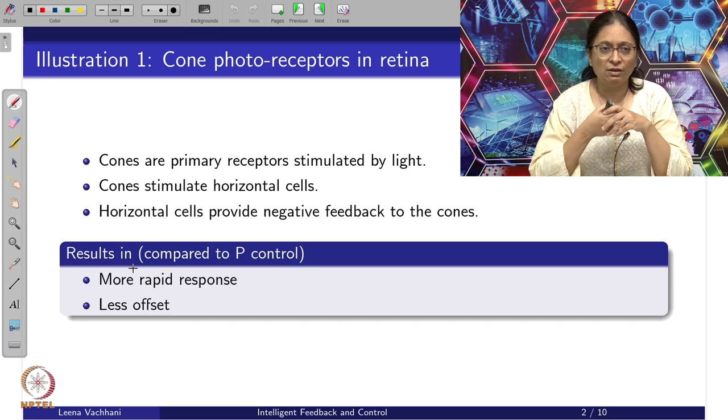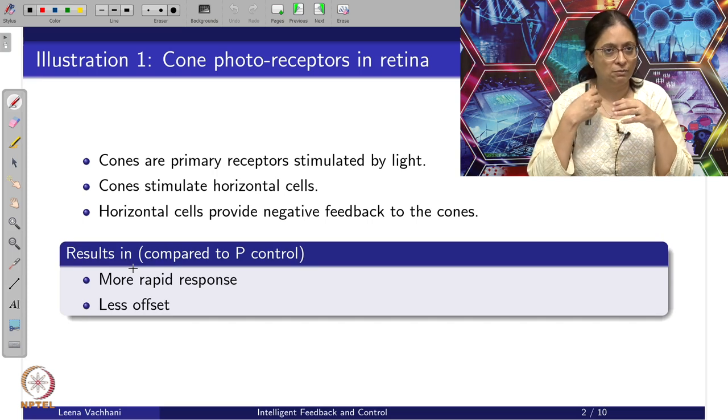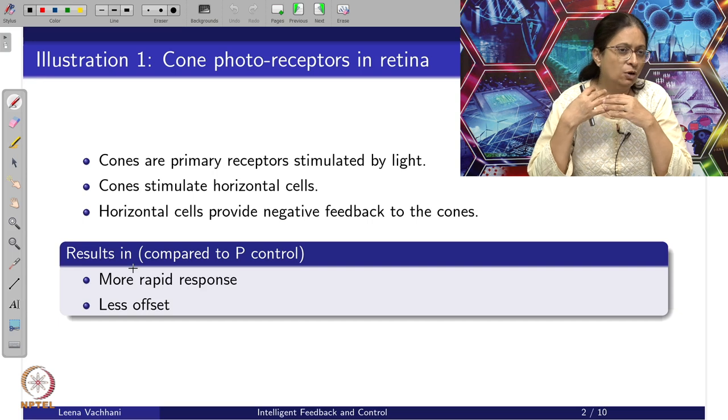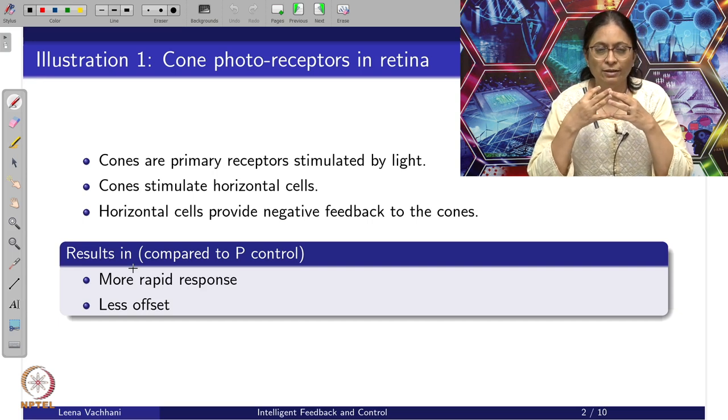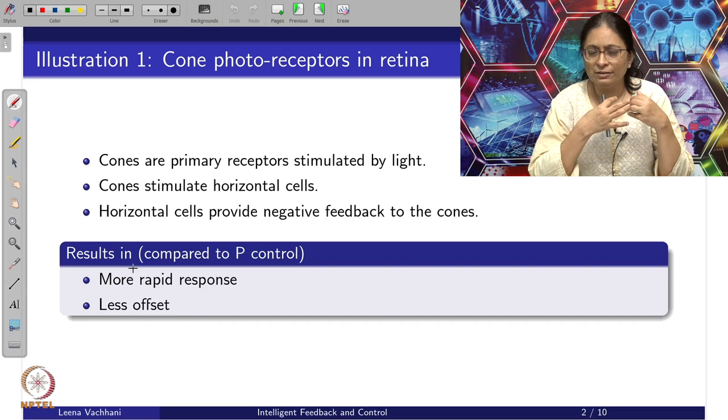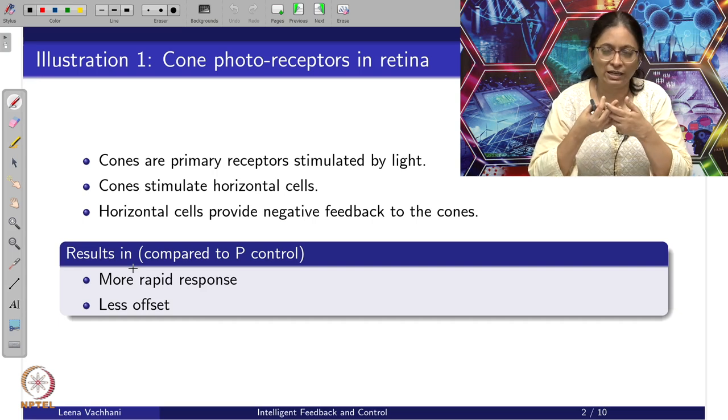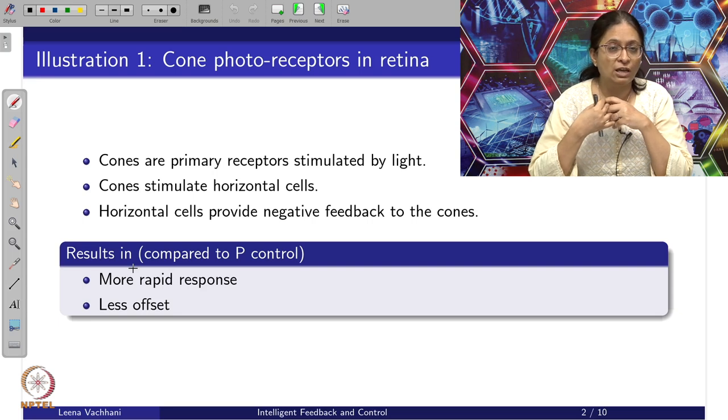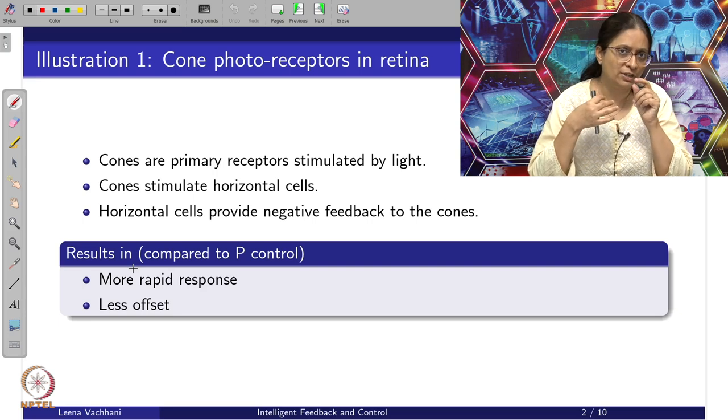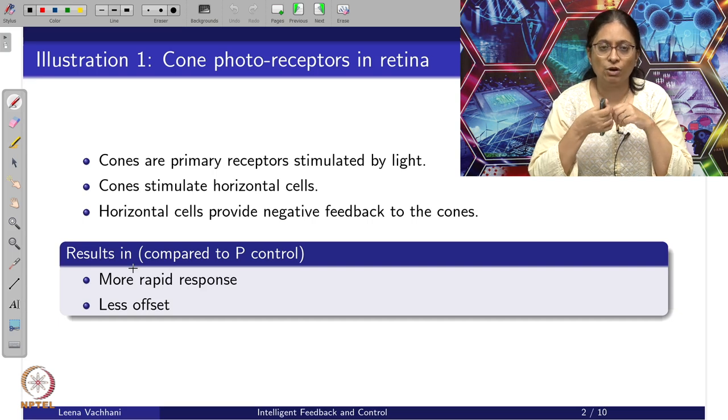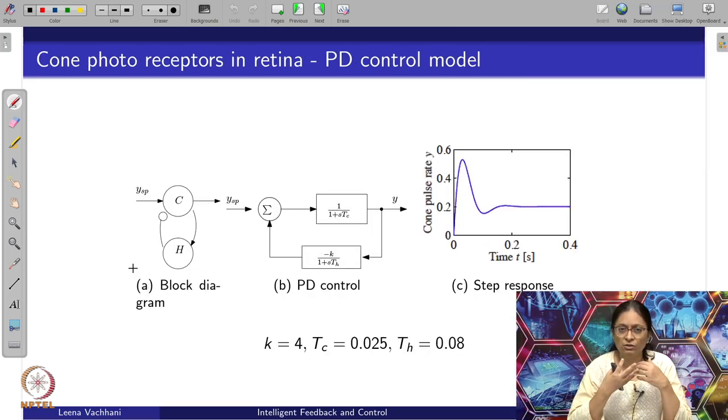This way of understanding shows that negative feedback is working. If I consider modeling it as a proportional controller, I can explain certain answers, but a PD controller gives more rapid response, less offset, and better set point adjustment. So PD control fits better compared to just applying proportional control.